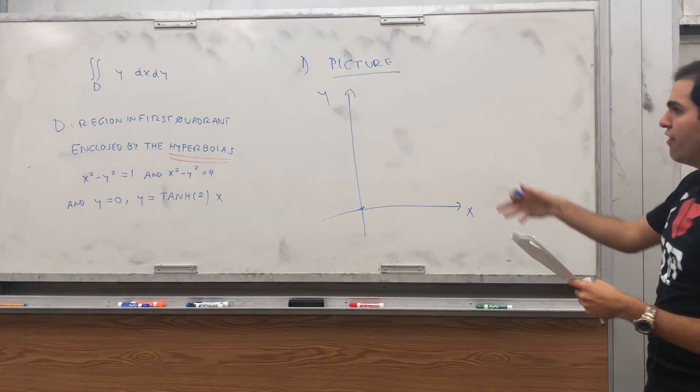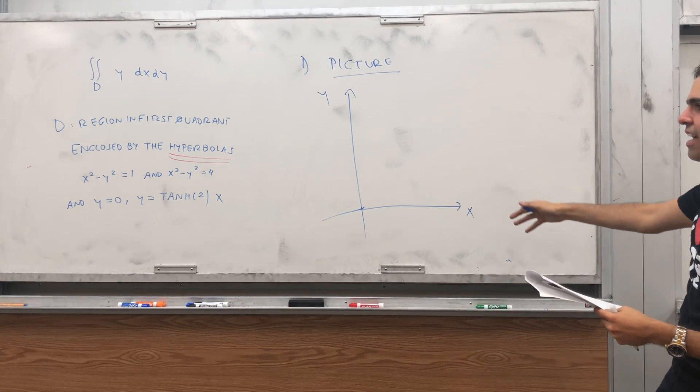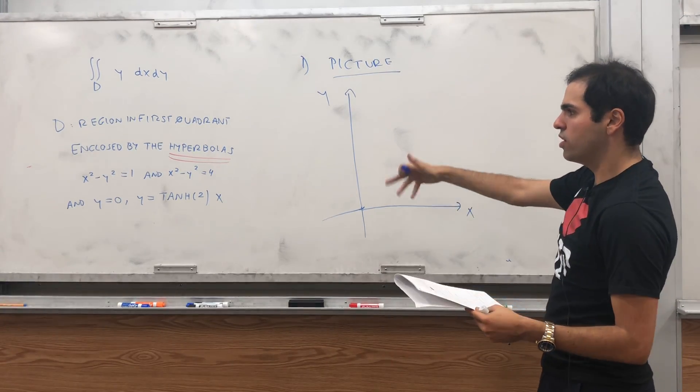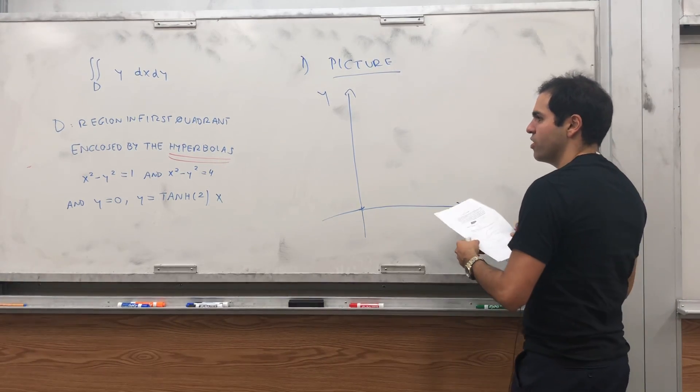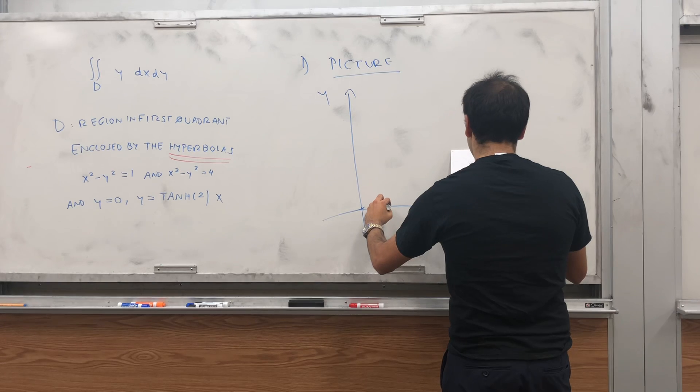So, first, you have the hyperbola, x squared minus y squared equals to 1. So, if you want y is square root of x squared minus 1, which looks something like that.